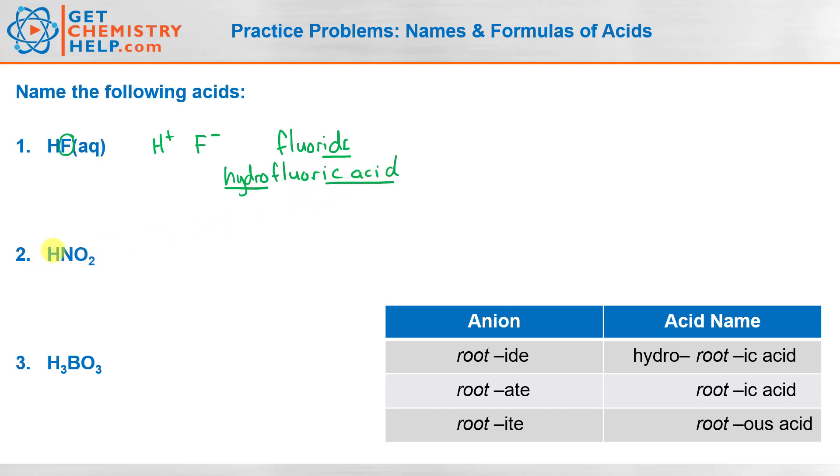How about number two? So HNO2. So the anion must be NO2 negative. And NO2 negative, we call that nitrite.